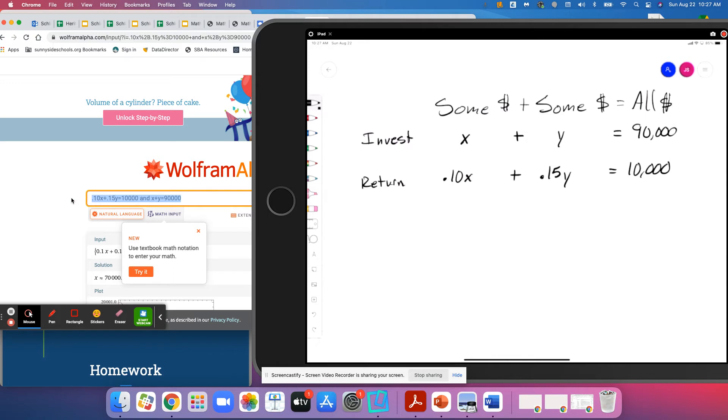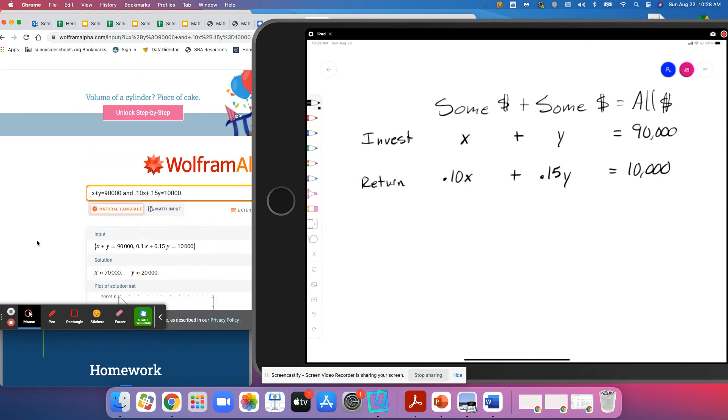We have two equations: one representing what she invested—some of the money plus some of the money equals all the $90,000—and one for her return—10% back from one fund and 15% back from the other fund, which will be $10,000 altogether. The way that we're gonna handle this in Wolfram is we're gonna put in x plus y equals 90,000, then we're going to use the word 'and' because we want Wolfram to solve these equations simultaneously, and then this other equation. We're gonna hit it and see what Wolfram tells us.